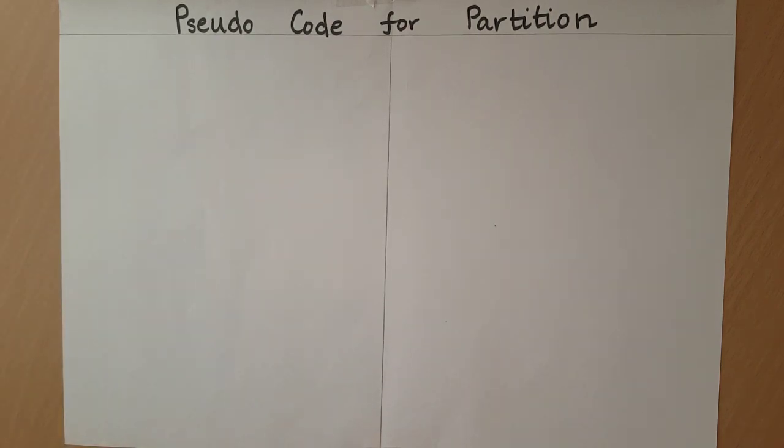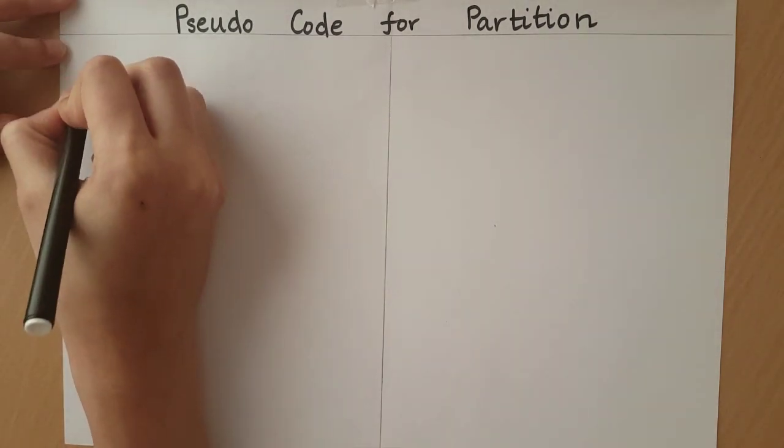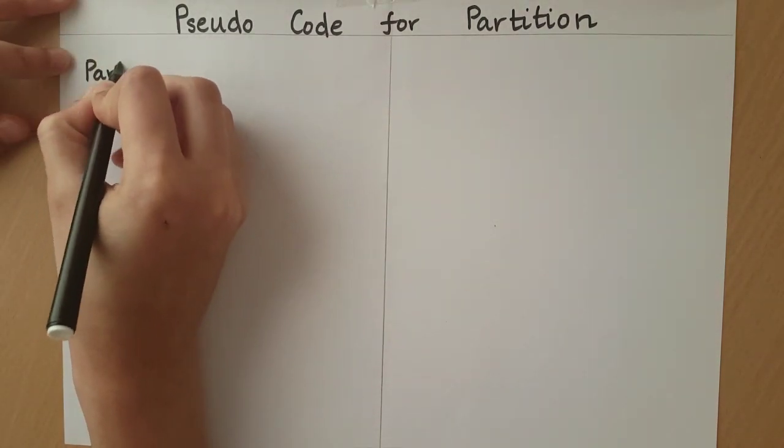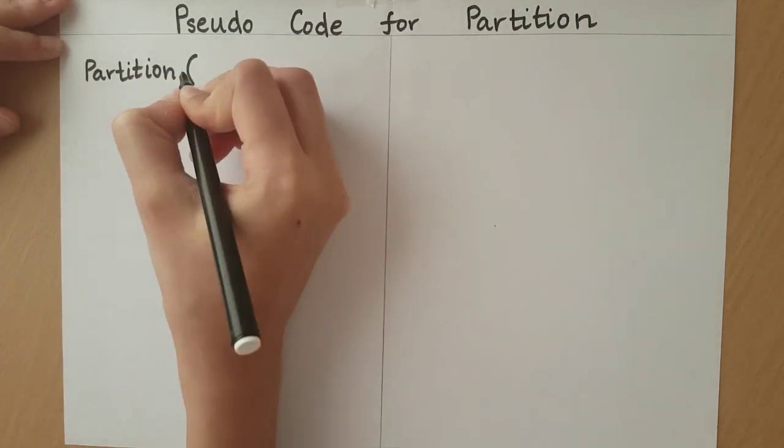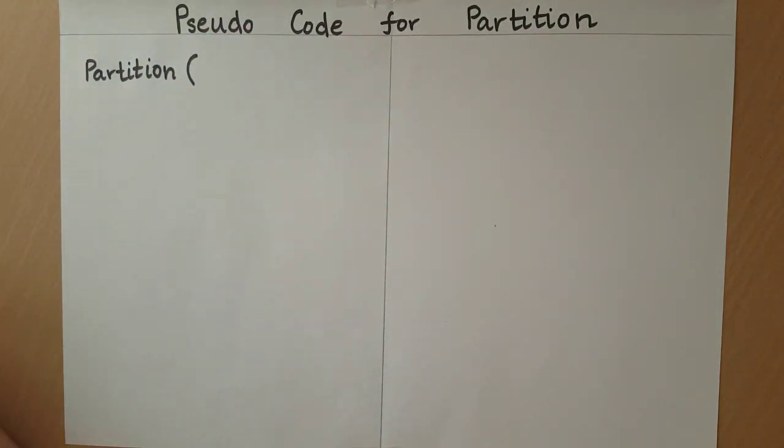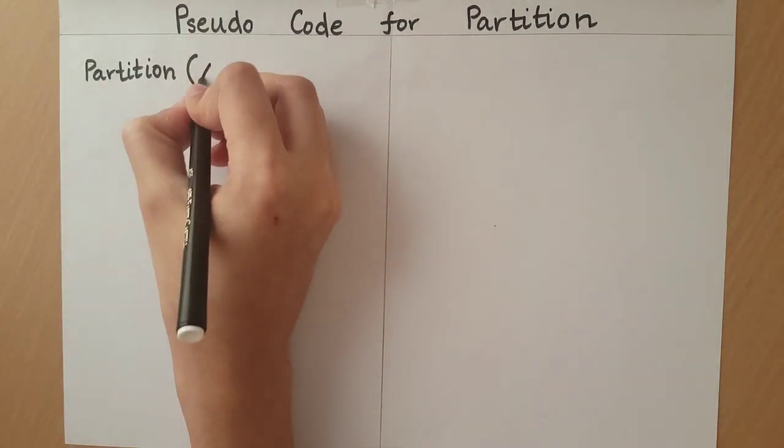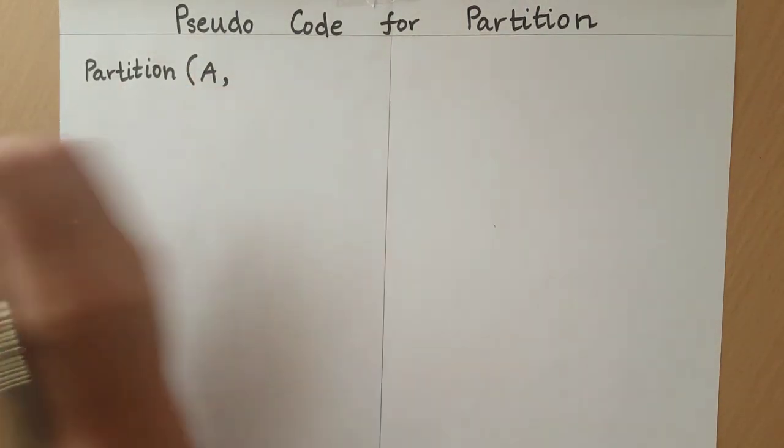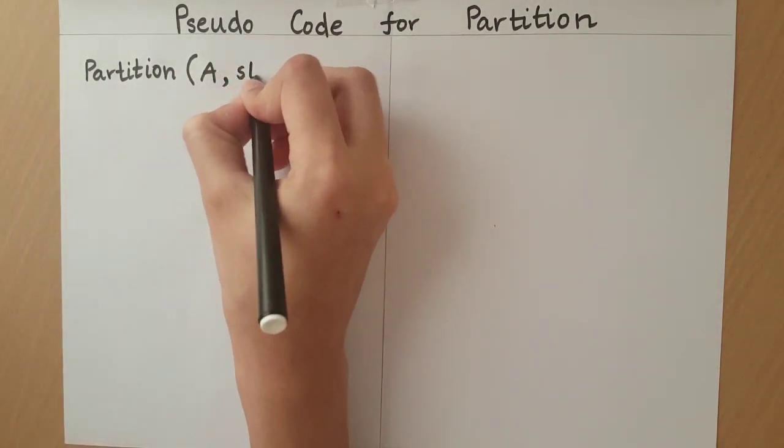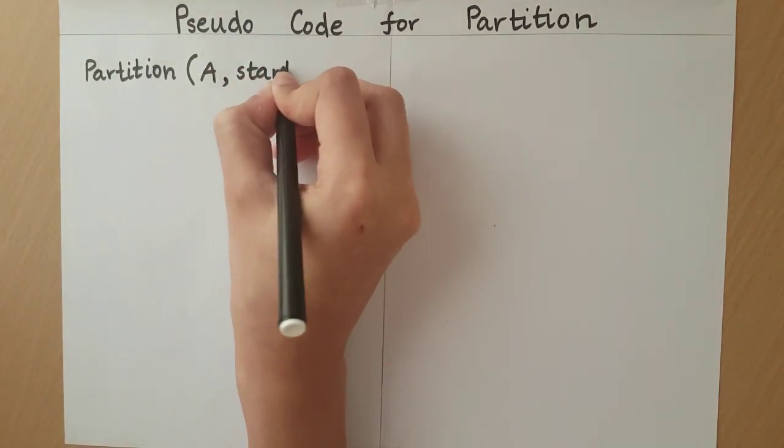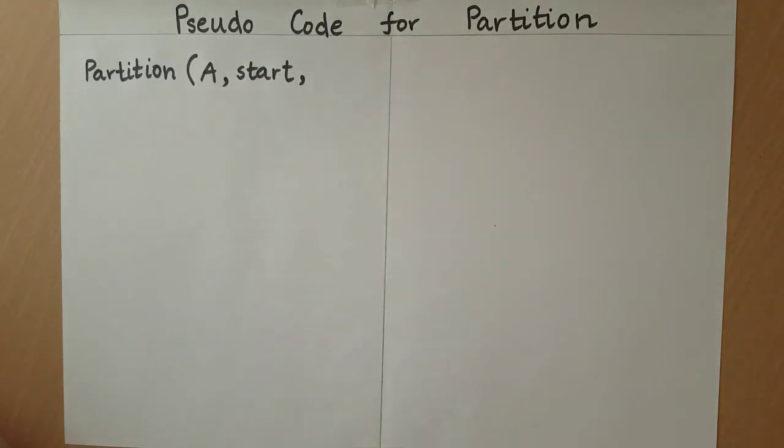If we were to write the algorithm for partition, it will take in an array, say A, the start index of the array, and the end index of the array.